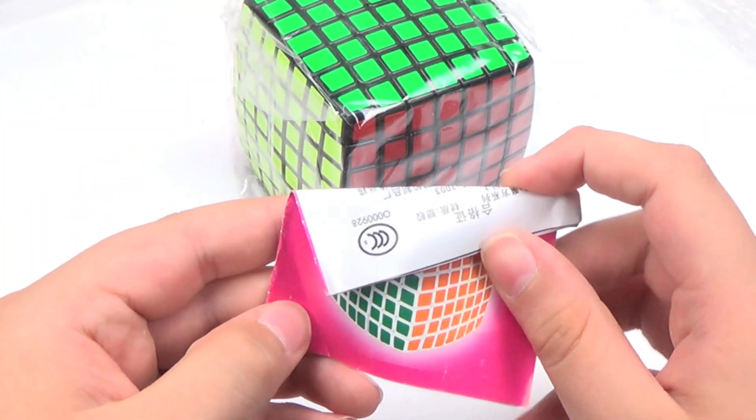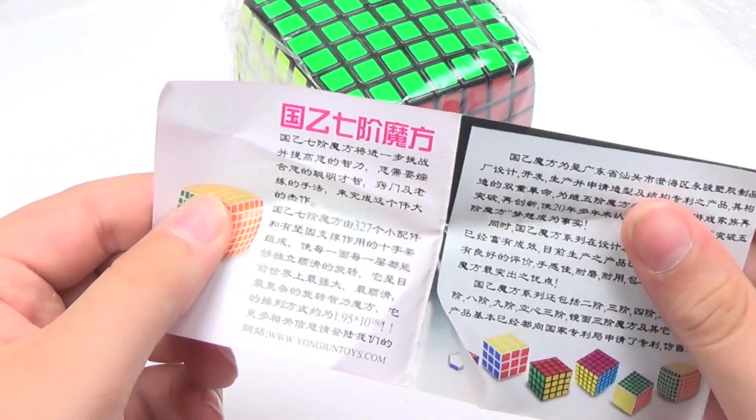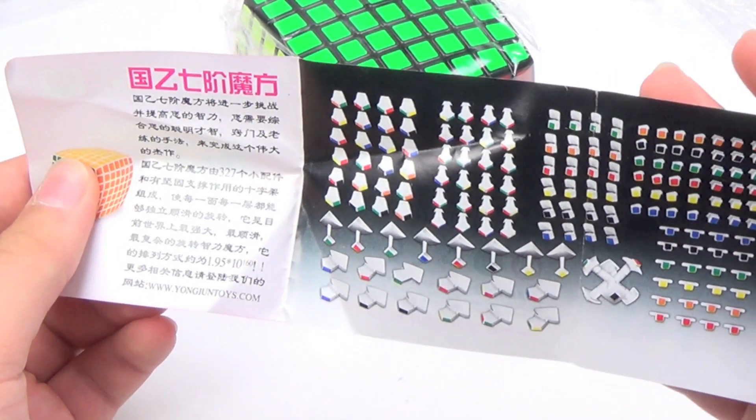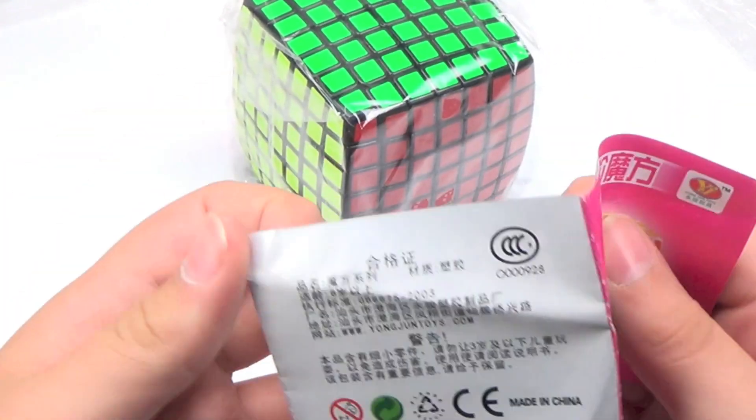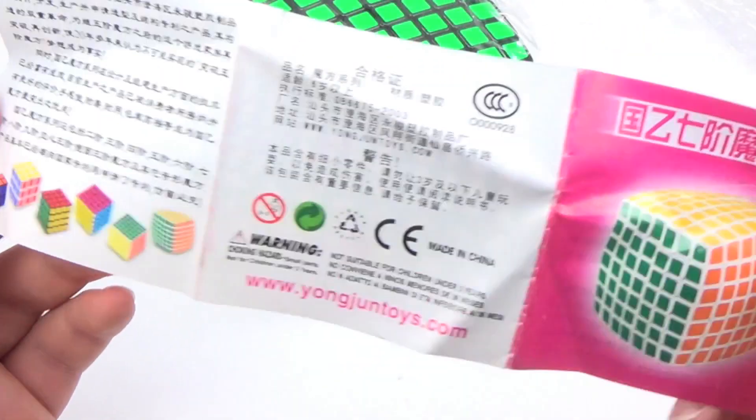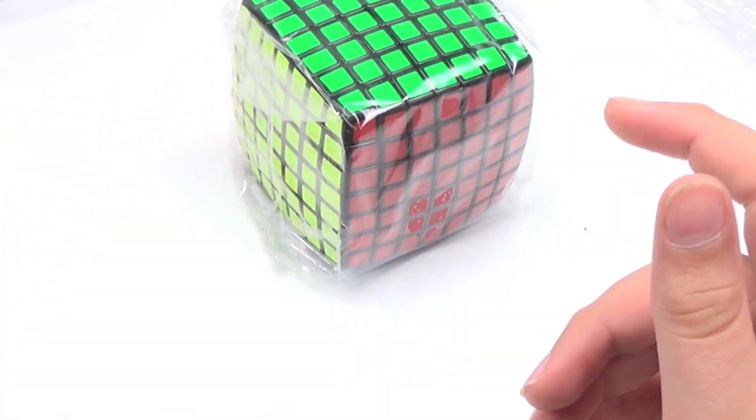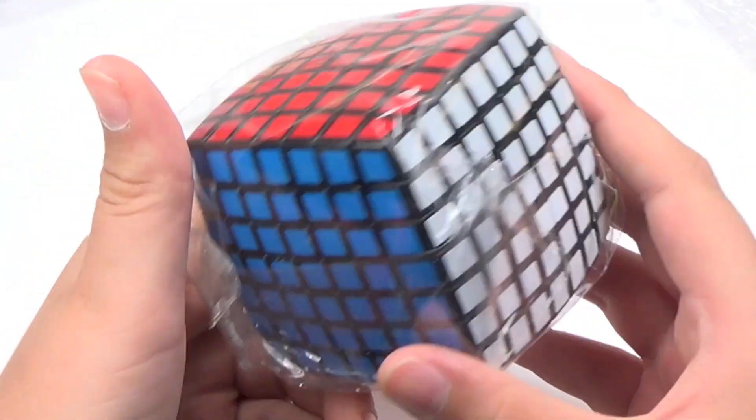I've got another one of these coming, actually, from CubeZZ. This looks like it's the pamphlet for the original YJ 7x7. I don't think they've made a new pamphlet yet for this cube yet.